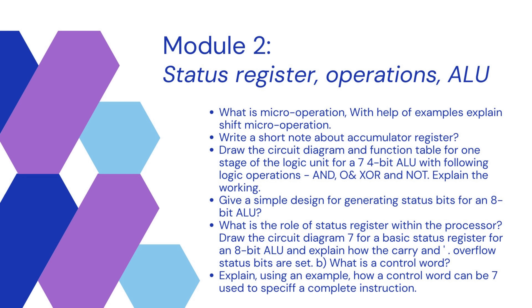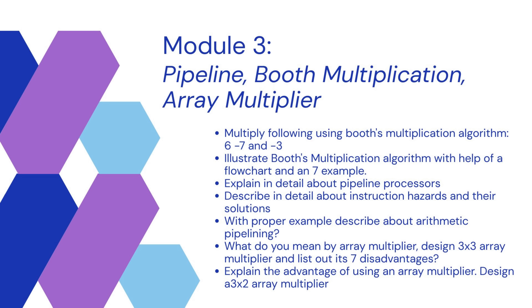In Module 2, the important questions are on micro operations and status register related questions. The status register is very important. Topics here can be skipped selectively. Module 3 has two important sections related to the pipeline. There are many different parts of the pipeline — it is a theory question, so you need to learn the pipeline thoroughly.